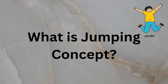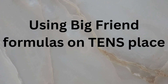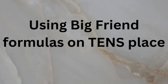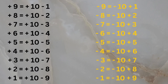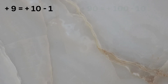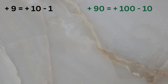Let's learn another very important concept today called jumping. Jumping is actually nothing else but using big friend formulas on the tens place. You are already familiar with the big friend formulas — let's see how these formulas change when you use them on the tens place and on the hundreds place.